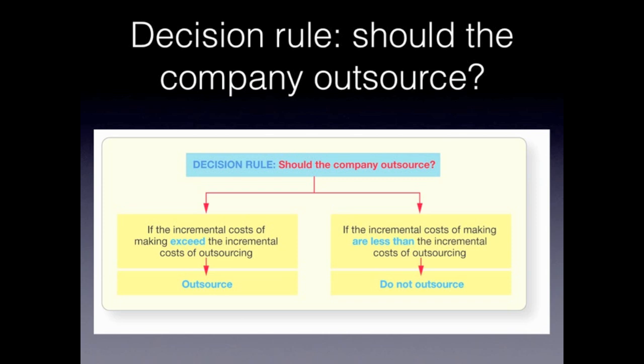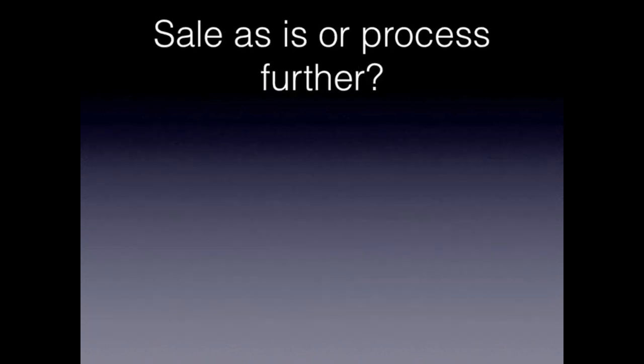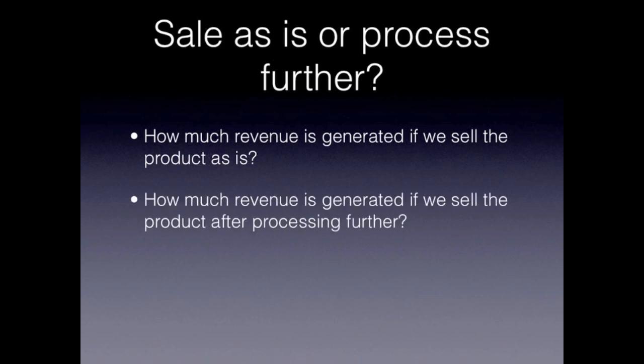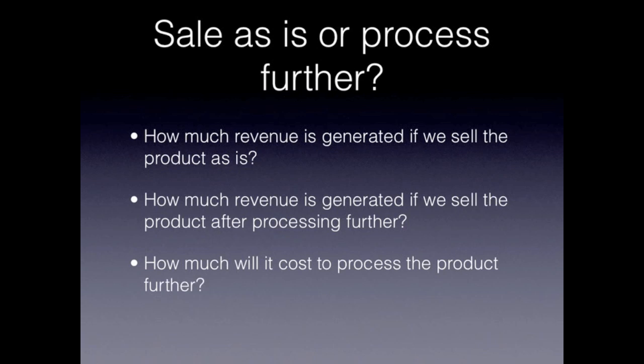Let's also look at the decision of whether we should sell a product as it is or process it further. Just as with all these other decisions, there are things management must consider. For example, how much revenue is generated if we sell the product as is, compared with how much revenue is generated if we sell the product after processing it further. Keep in mind, typically if you process a product further, there's going to be additional cost involved.